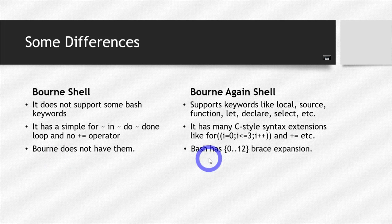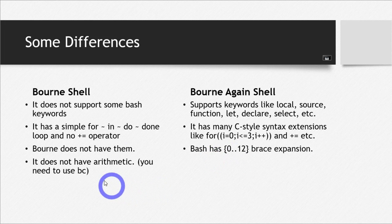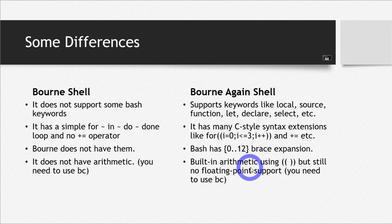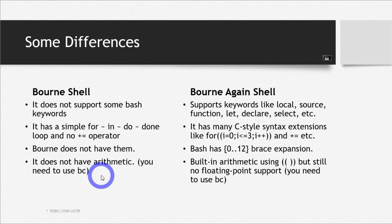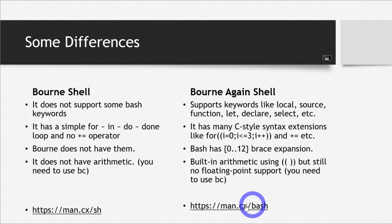Born shell does not have brace expansion — for example, a range from 0 to less than 12. Bash has this, but born shell doesn't. Born shell does not have arithmetic; you need to use the bc calculator. While bash has built-in arithmetic using these operators, though there is no arithmetic for floating point in bash either — you still have to use the bc calculator. If you want to see things in detail, there are online manuals for both born shell and born again shell.